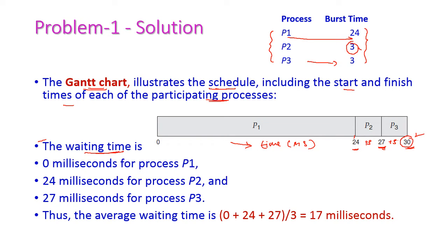Now let us compute the waiting time. The waiting time of P1 is 0 because this is the first process — immediately the process will get CPU for execution, so there is no waiting time for P1. The waiting time of P2 is 24 milliseconds because the burst time of P1 is 24; after completing P1 only, P2 will start execution. The waiting time of P3 is 27 milliseconds — after completing P1 and P2 only, P3 will start execution. The average waiting time is 0 plus 24 plus 27 divided by 3, which is equal to 17 milliseconds.